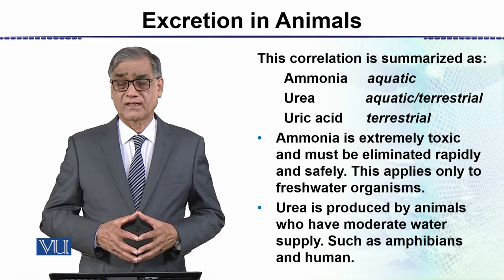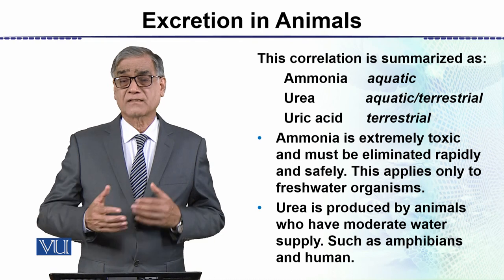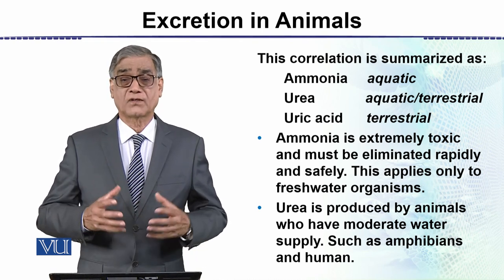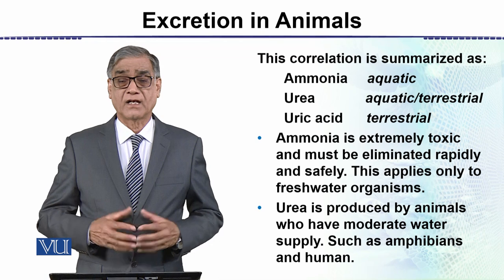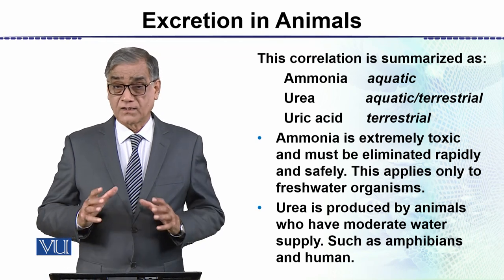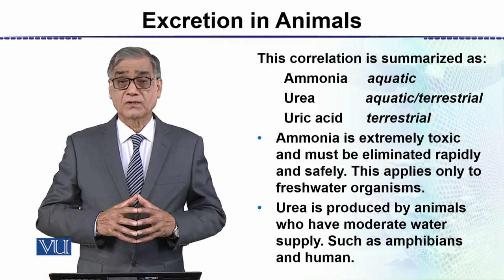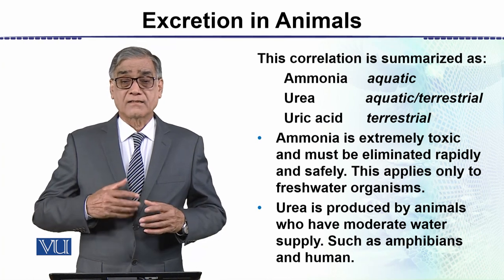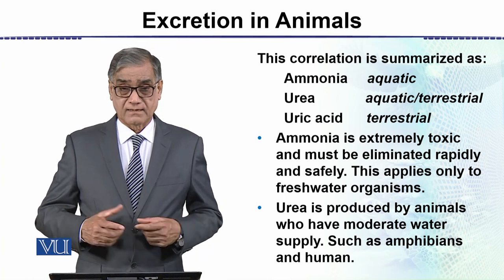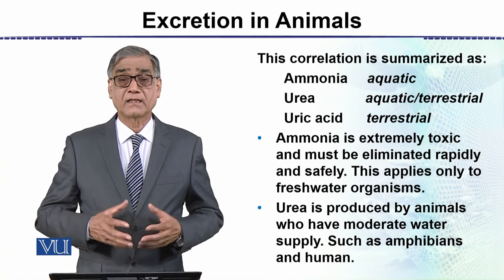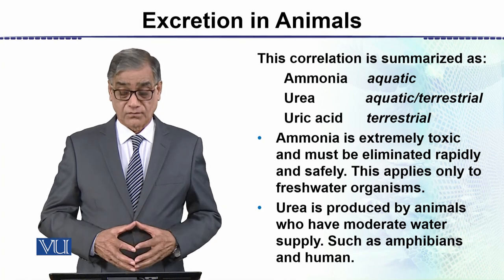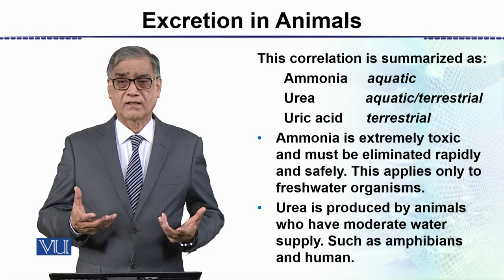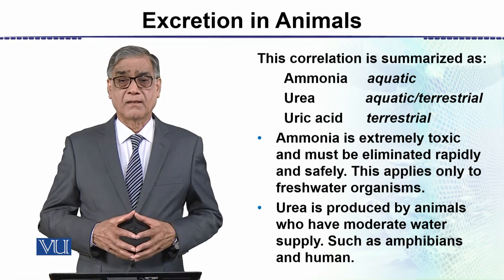Some animals live in relatively dry conditions and they produce urea, because urea is relatively less toxic compared to ammonia. Therefore, not as much water is needed for its removal, though they still need less water compared to fully aquatic animals.